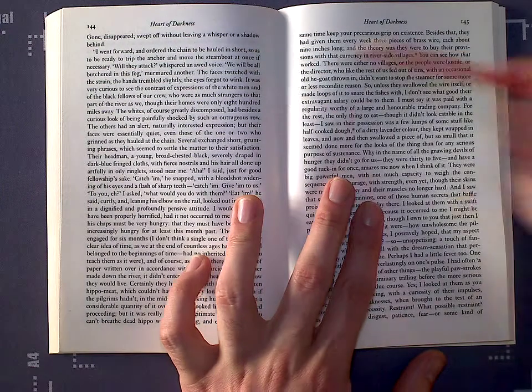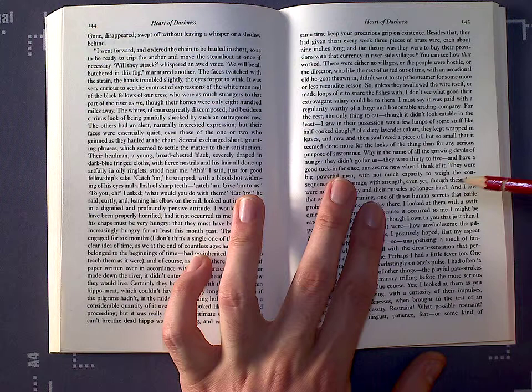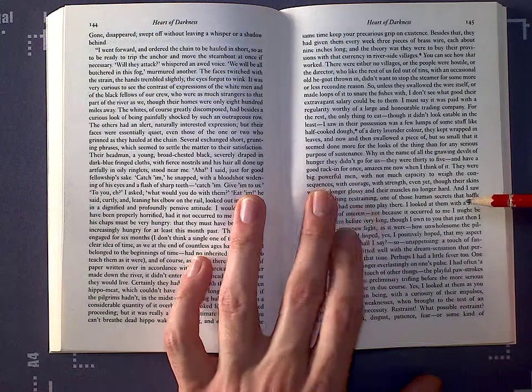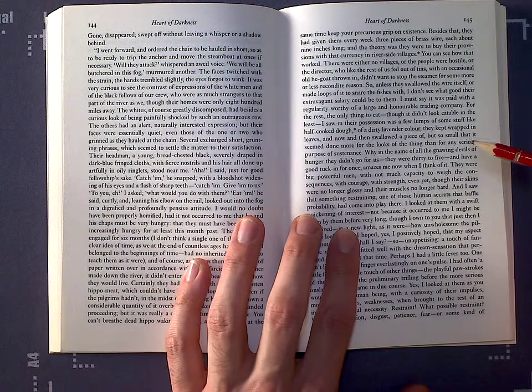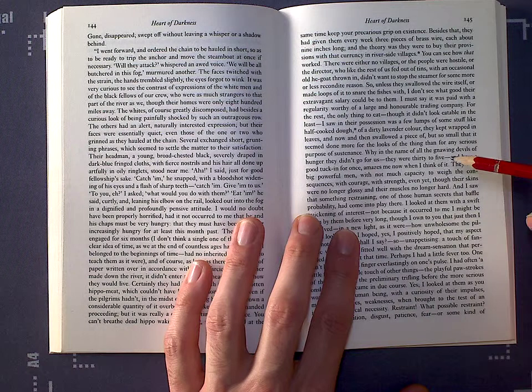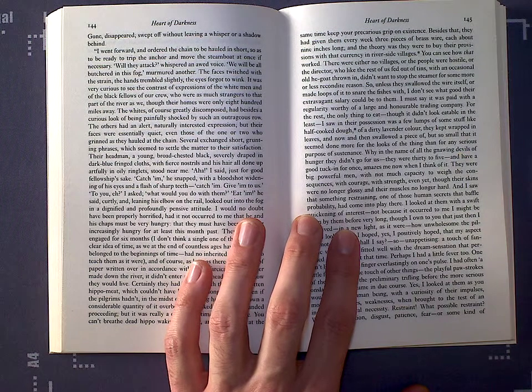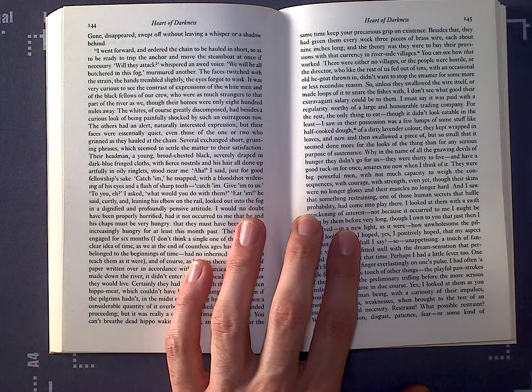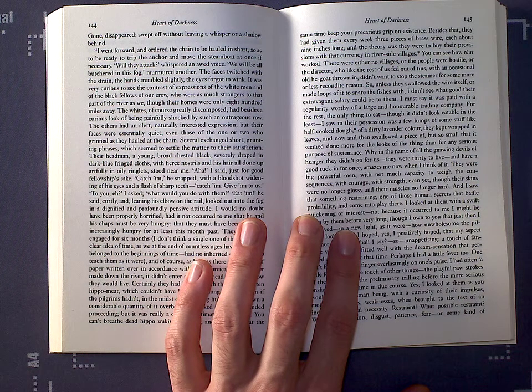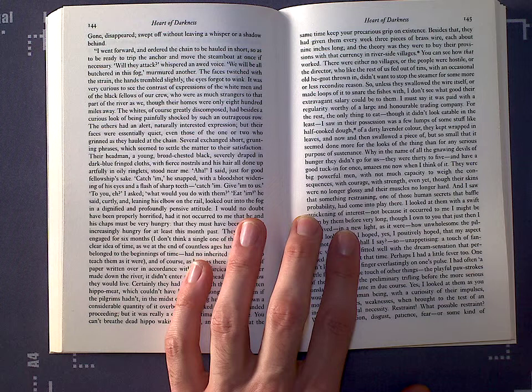So, this is a very long passage from 144 through to 145, but it's interesting because it looks at Marlow's realization with regards to barbarity and civility and his redefining of those two terms because he makes a bit of a revelation about the savages on board of his steamboat.